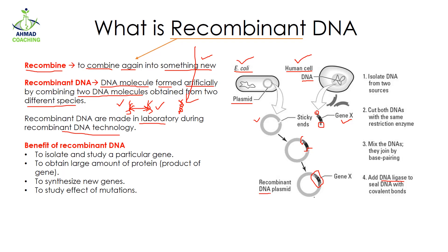What are the benefits of recombinant DNA, and why do we need to make and study it? Recombinant DNA is very beneficial if you want to isolate and study a particular gene. For example, if I want to study Gene X but there are many genes (A, B, C, D, E, F...), I cannot study Gene X directly in a human cell. So I separate Gene X and by making a recombinant DNA I can easily study it.